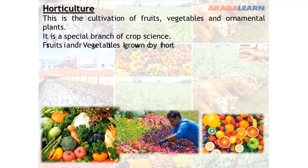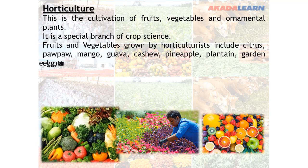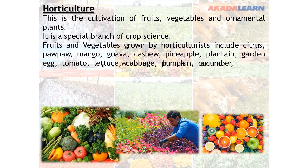Fruits and vegetables grown by horticulturists include citrus, pawpaw, mango, guava, cashew, pineapple, plantain, garden egg, tomato, lettuce, cabbage, pumpkin, cucumber, and banana.